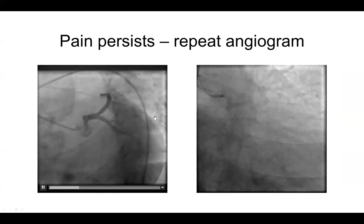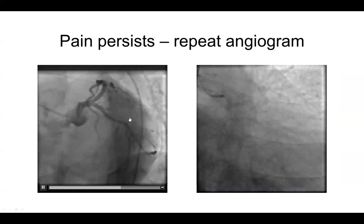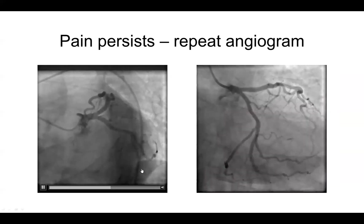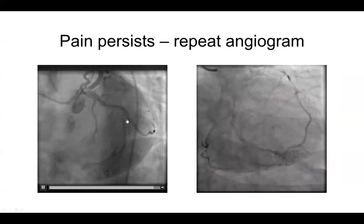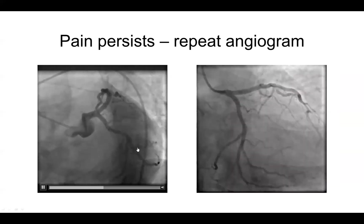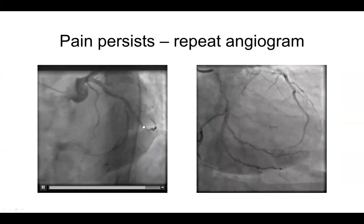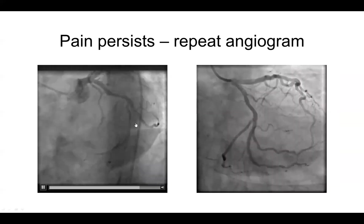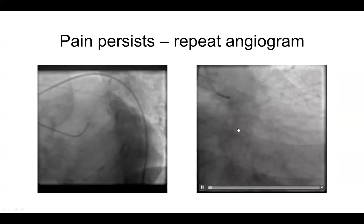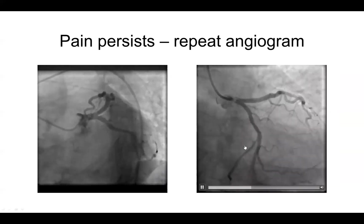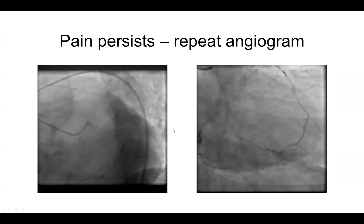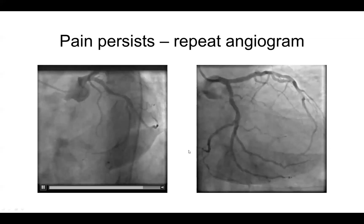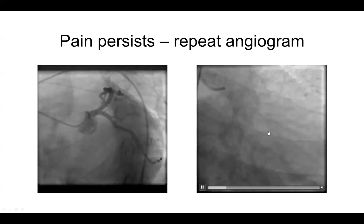However, the patient persisted with chest discomfort and was brought back to the catheterization laboratory. On repeat coronary angiography, it was clearly identified that a posterior branch of the obtuse marginal was occluded, consistent with a type 1 occlusive myocardial infarction that underwent successful revascularization. This is an example of how patients may initially appear to have MINOCA, but careful angiographic evaluation or further study may reveal occlusive coronary artery disease.